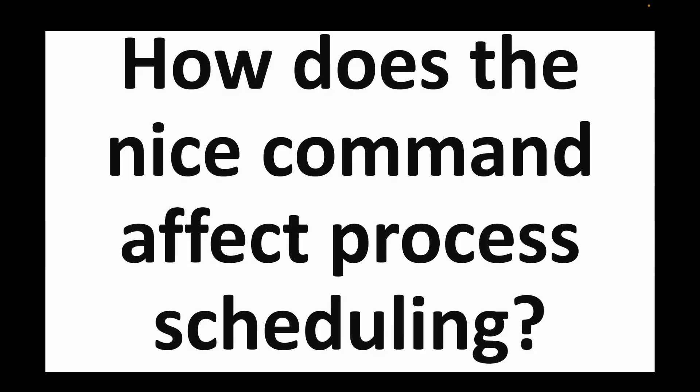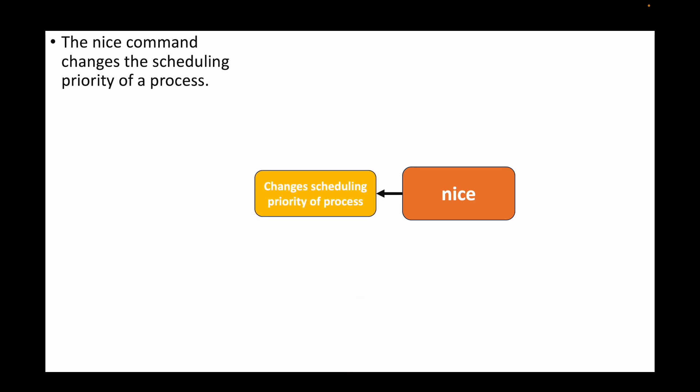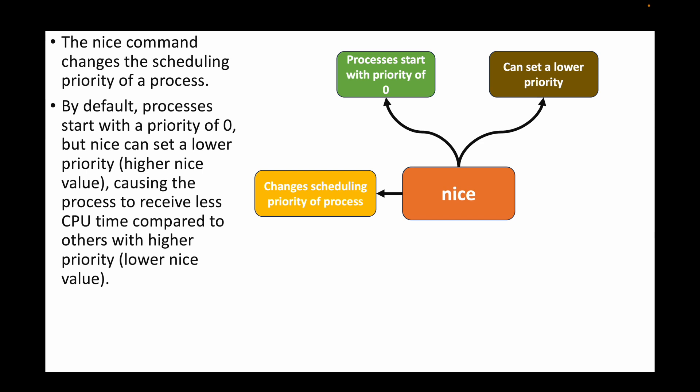The next question is: how does the nice command affect process scheduling? The nice command controls the scheduling priority of a process. By default, a process starts with a priority of 0, but we can use the nice command to set a lower or higher priority. A lower priority results in a higher nice value — for example 10, 15, 20, 25 — and a higher nice value means the process receives less CPU time.